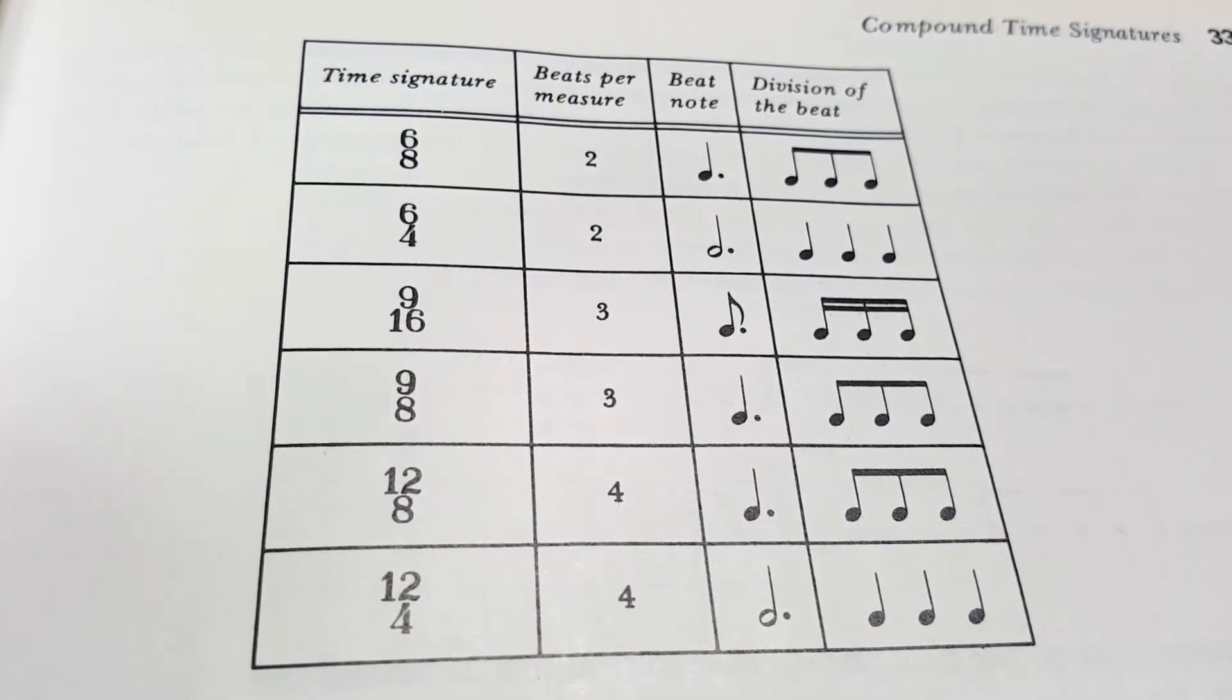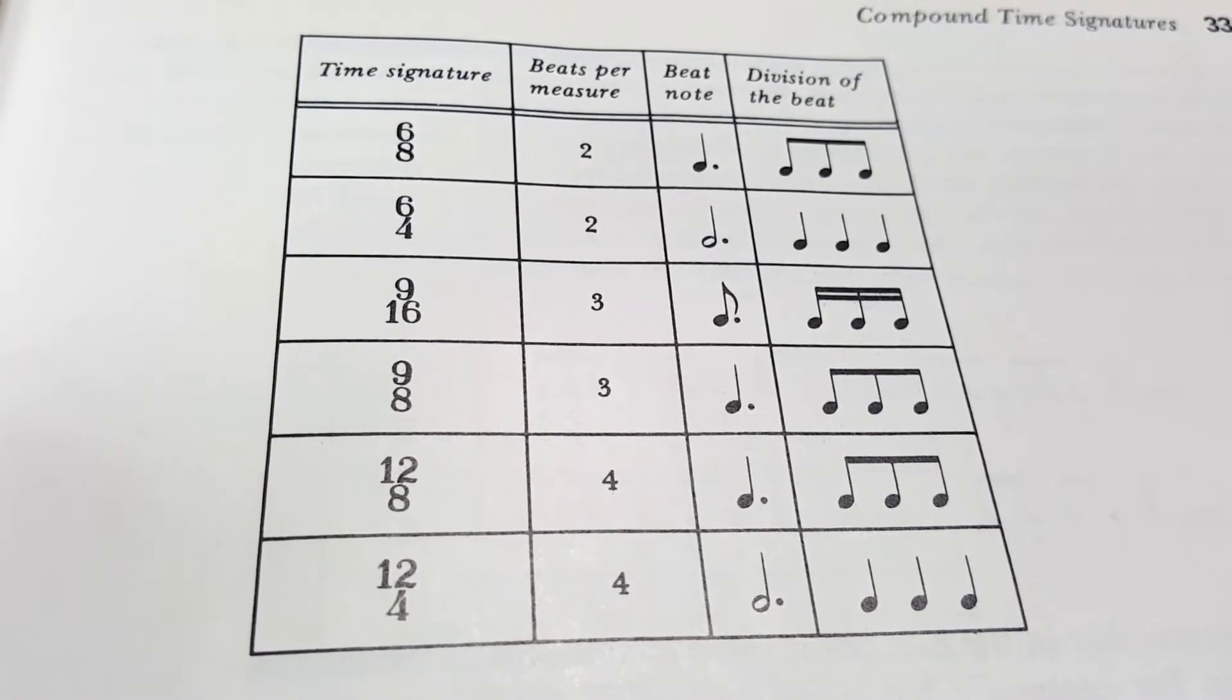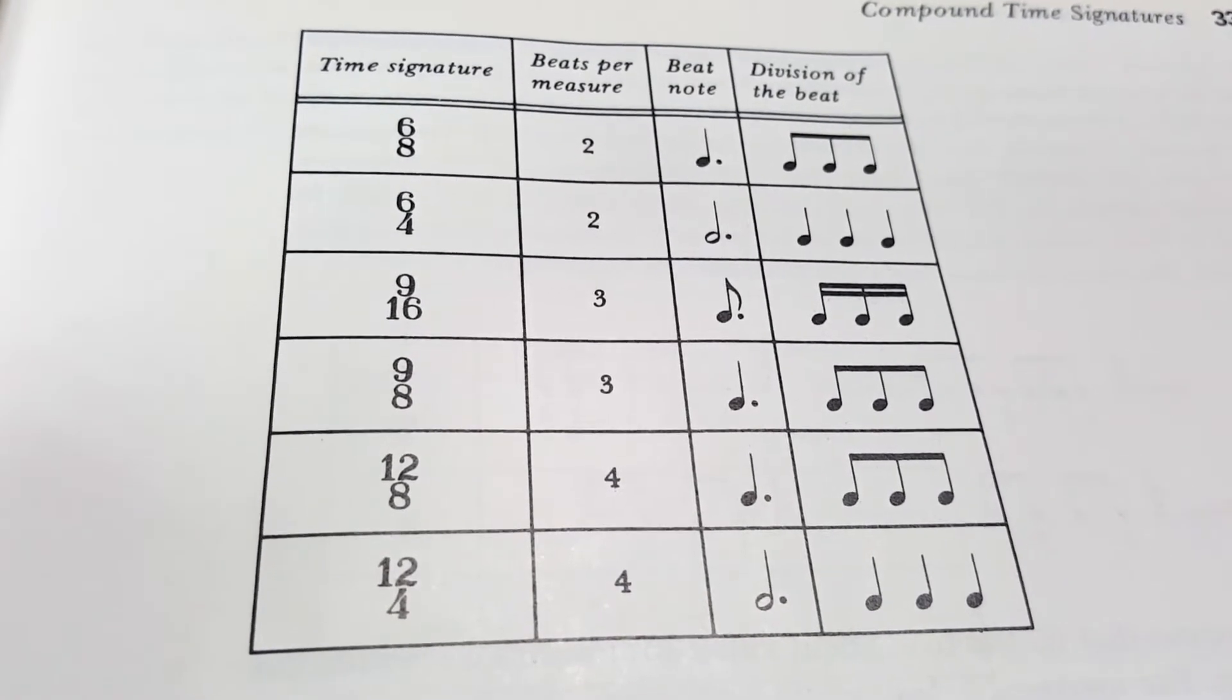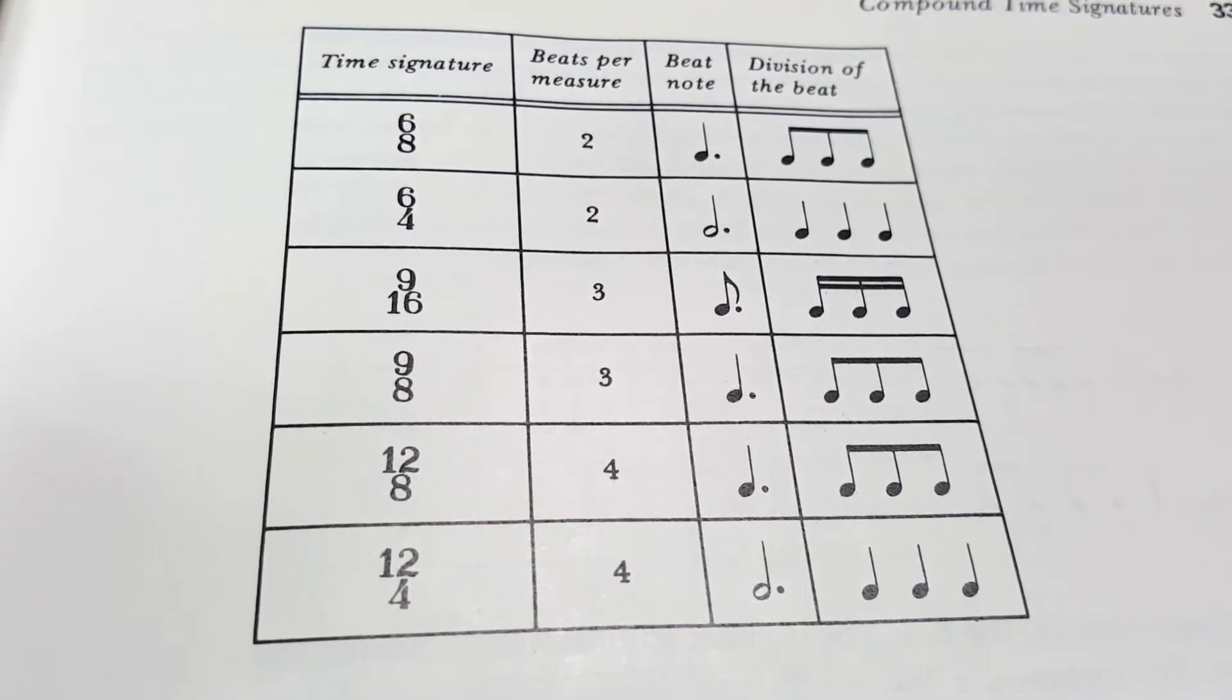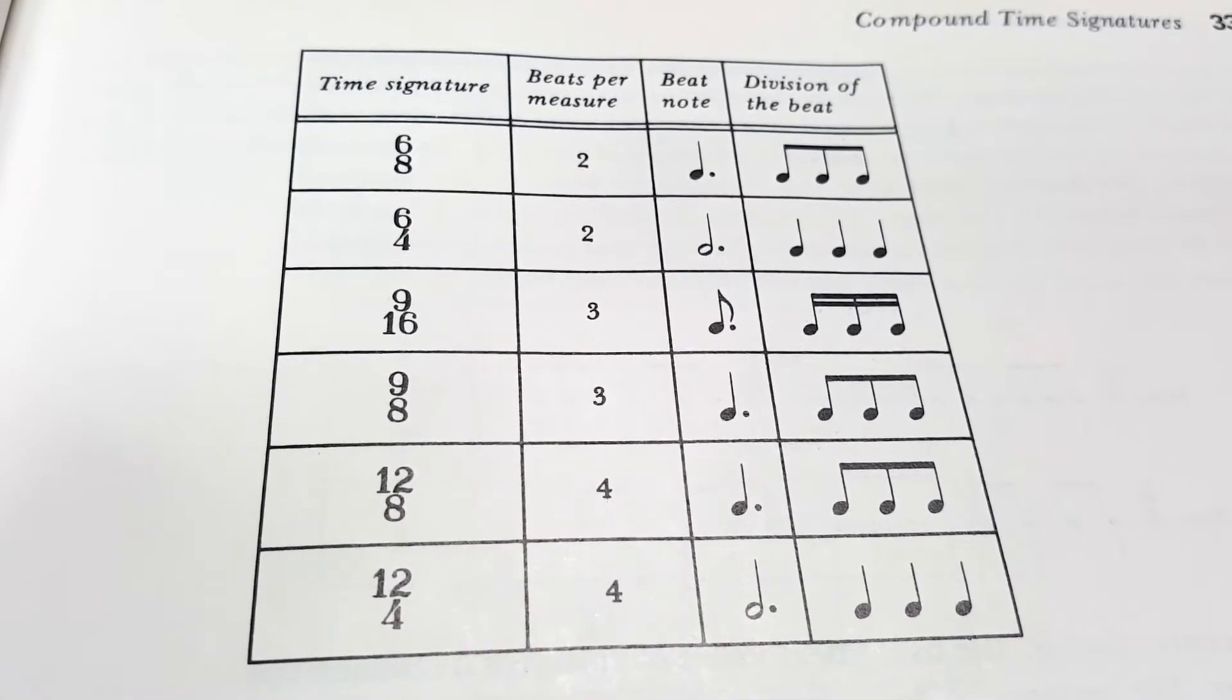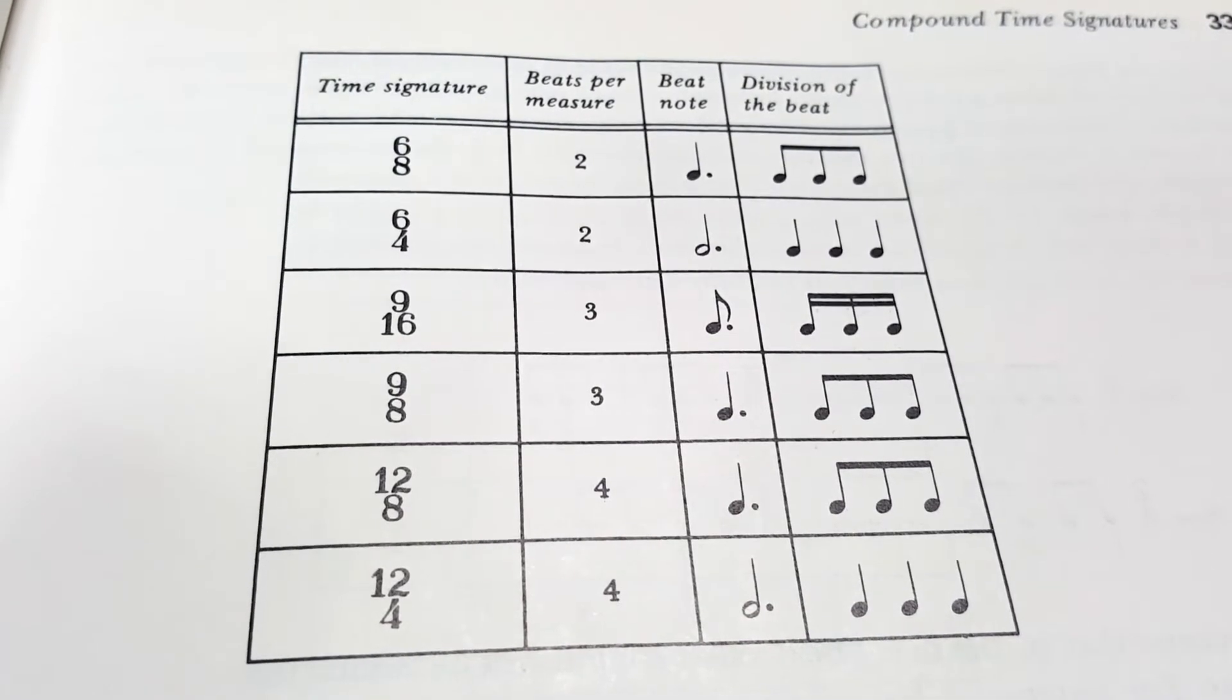As you can see, the time signature, six-eight time, can also be counted in two, six-four can be counted in two, nine-sixteen can be counted in three, and so forth as you go down the chart. And it can create problems of composing music using dotted notes and dotted rests.